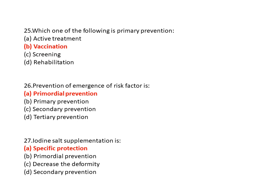Question 27: Iodine salt supplementation is an example of? Option A is specific protection, option B is primordial prevention, option C is decrease of deformity, and option D is secondary prevention. The correct answer is A — specific protection. Note that vaccination is primary prevention.